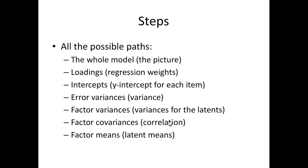Here are all the different possible things we could test: the entire model structure, the loadings (regression weights/path coefficients), the intercepts for each manifest variable, the error variances on those manifest variables, the factor variance, the factor covariance (correlation), and factor means. Generally, what we're going to do are the first four. The last three — factor variance, covariance, and factor means — are a separate thing. We'll talk about the first four and then get into when people do the last three.